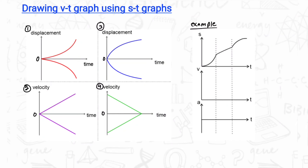Now let's work through an example: we have an ST graph and should draw the VT and AT graphs. In the first stage, corresponding to the first section, the velocity-time graph is a straight line inclined to the horizontal. In the second section, we have a constant straight line with a fixed gradient, so the velocity-time is a horizontal line.